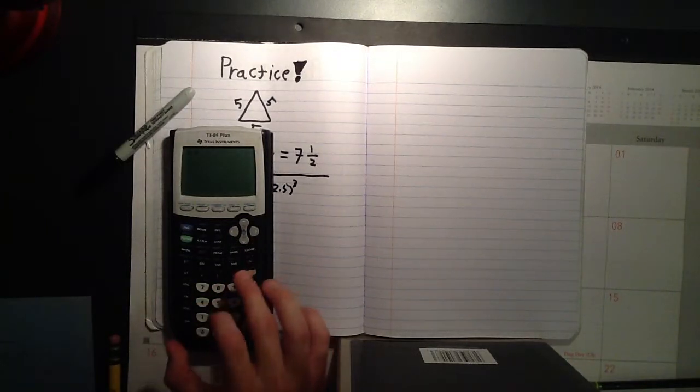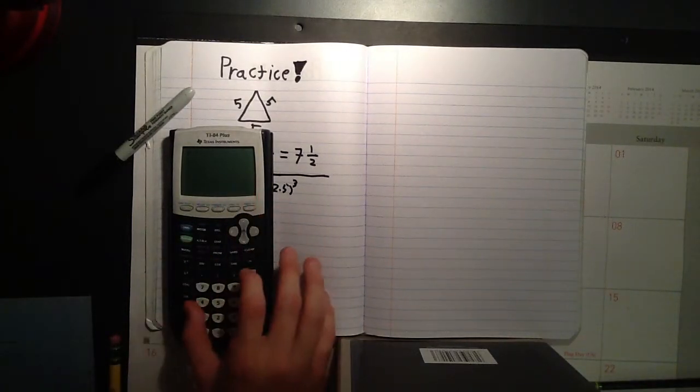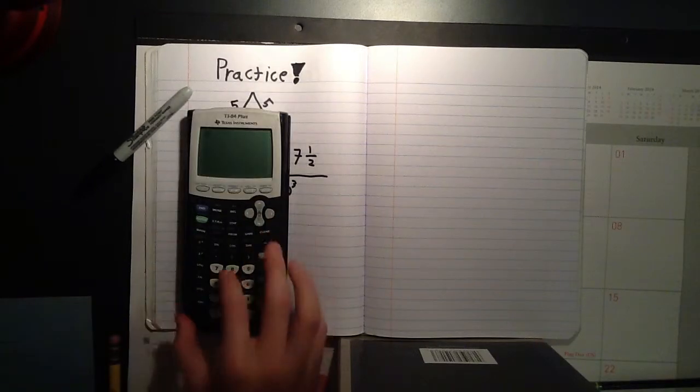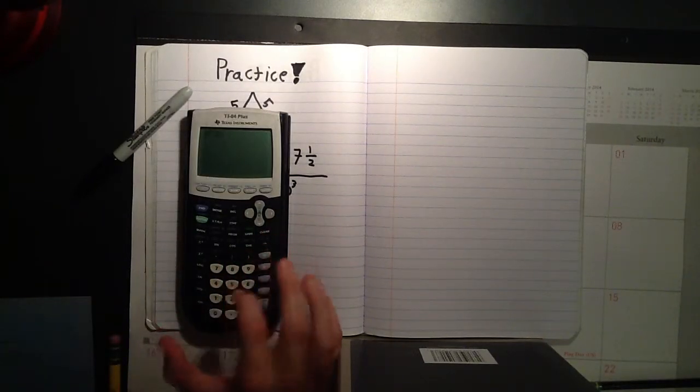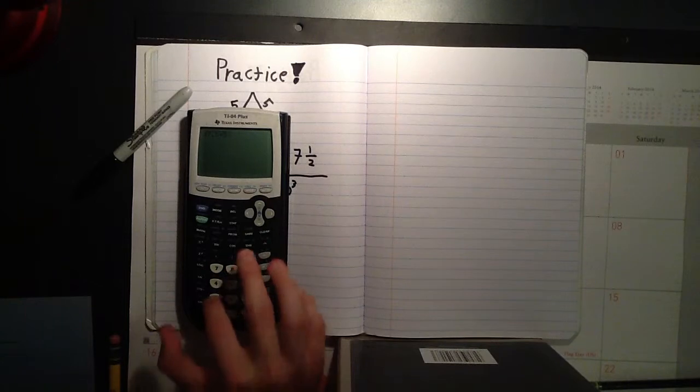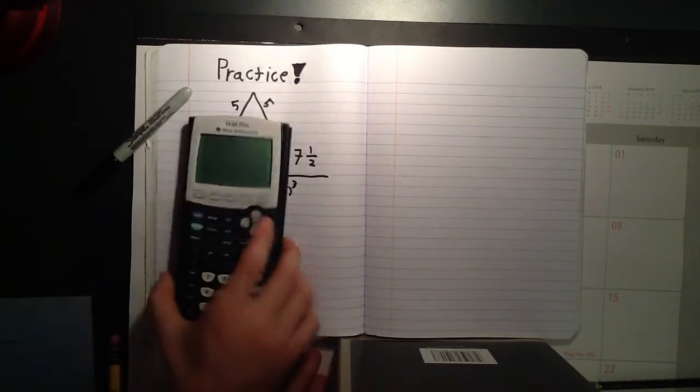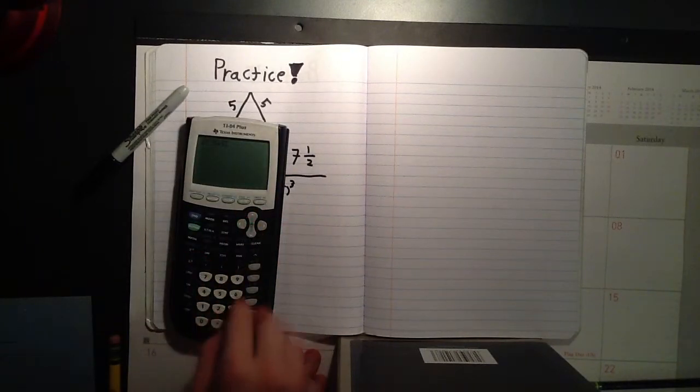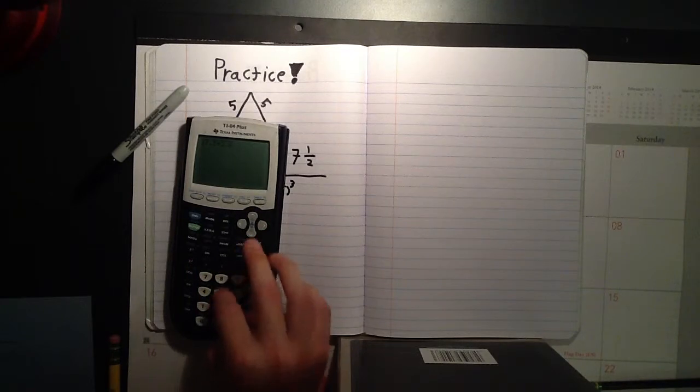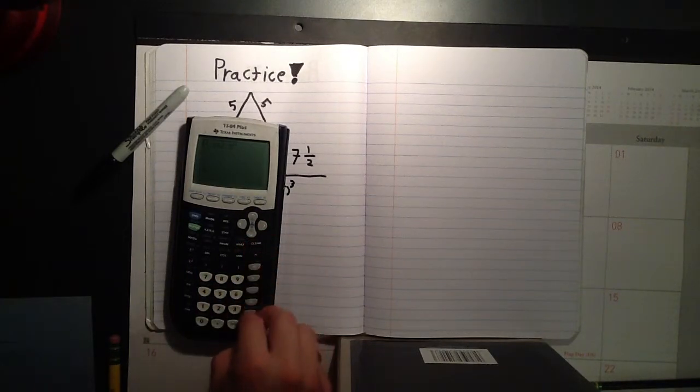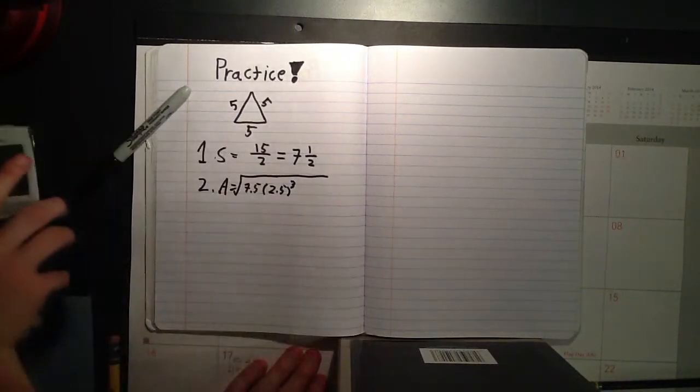Seven point... wait. Square root of seven point five times... Wait, no. 2.5 squared. Well, I'm not with it today. 2.5 cubed is approximately 10.8.